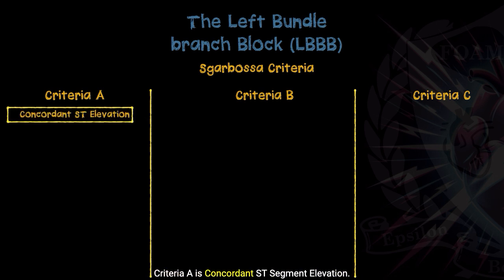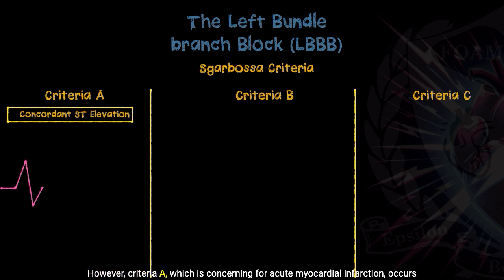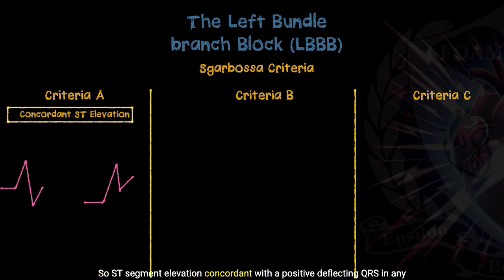Criteria A is concordant ST segment elevation. Concordant means in the same direction. On a normal left bundle branch block, you're going to have a positive deflecting QRS and there should be some degree of ST segment depression — that's what we should expect. However, criteria A, which is concerning for acute myocardial infarction, occurs when we have a positive deflecting QRS and some ST segment elevation. This is really no different than how we normally scan for STEMIs. So ST segment elevation concordant with a positive deflecting QRS in any lead is concerning for acute myocardial infarction via criteria A of SCARBOSA.